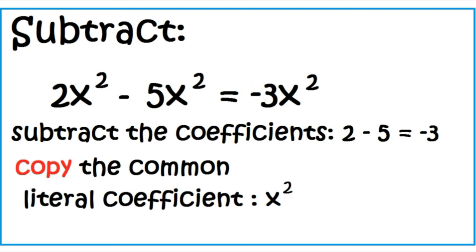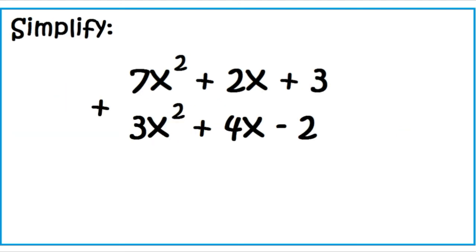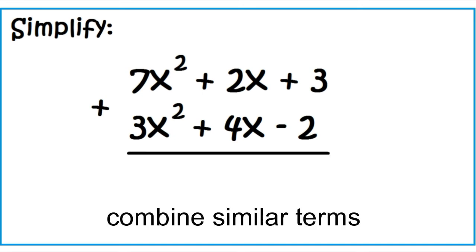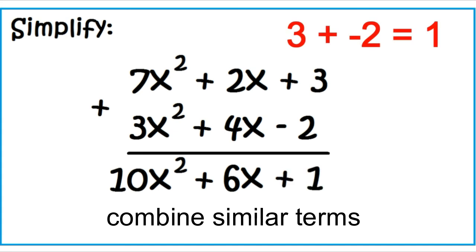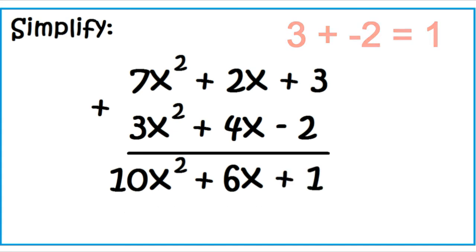Let's simplify polynomials with three terms. Simplify 7X squared plus 2X plus 3 plus 3X squared plus 4X minus 2. Remember, combine similar terms. 7X squared plus 3X squared is 10X squared. 2X plus 4X equals 6X. 3 plus negative 2 is 1. The answer is 10X squared plus 6X plus 1.